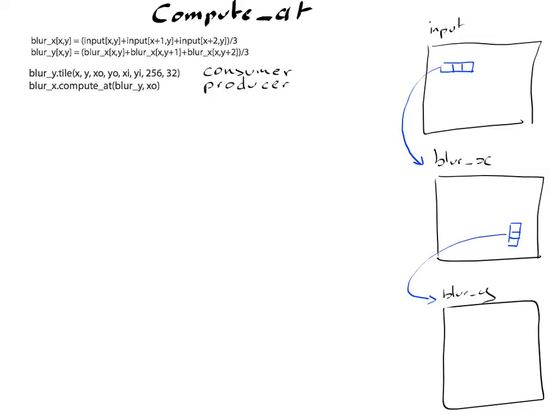So we're going to start with our consumer, and we're going to generate the loops corresponding to the tiling. Blur y,